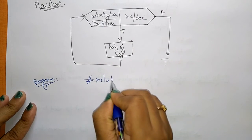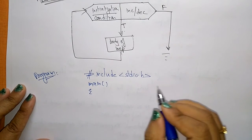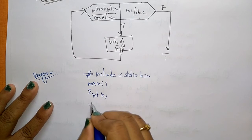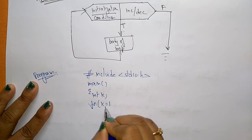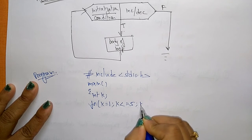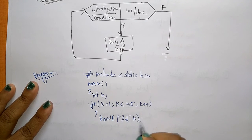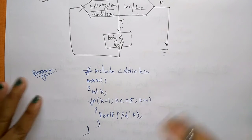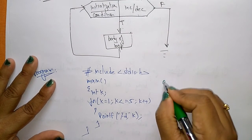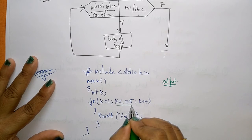Now let me write the program. Hash include stdio.h, and writing the main function. I declare an integer variable k. I initialize k equal to 1, the condition is k less than or equal to 5, and k plus plus. Then printf with %d and k. When k is 1, the condition 1 less than or equal to 5 is satisfied.